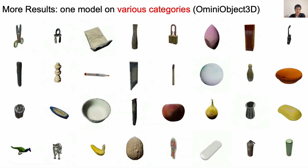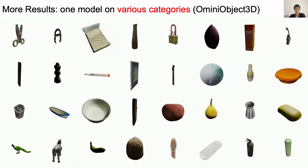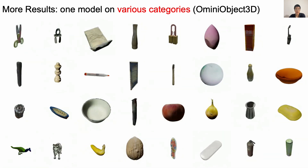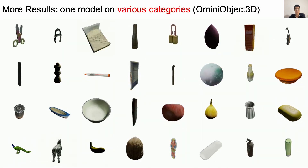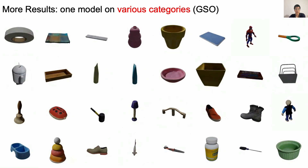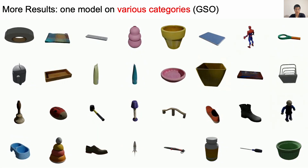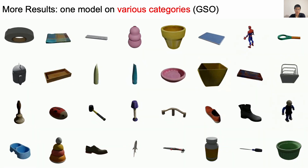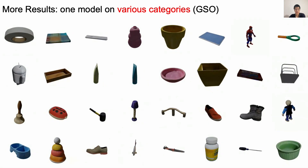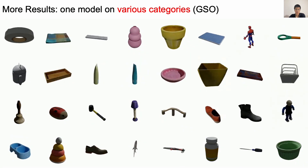We also directly evaluate this model on new datasets, such as Omniobject3D, which scans many real objects from daily life. As we can see, our Free3D outputs consistent video for various categories. We also test the model on the real Google Scanned Objects dataset. Similar to Omniobject3D, our model achieves consistent video rendering without any additional 3D representation.